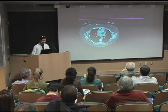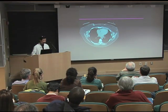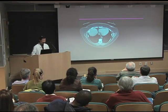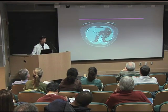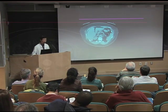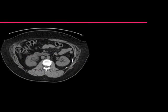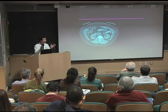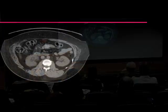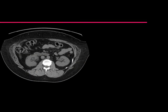We can also take stacks of images and look through the body like flipping through pages of a book. But as you can see, this is a little bit tedious — it involves a lot of concentration and effort. We can also take these and put them back together so we can get a human being that looks like this.